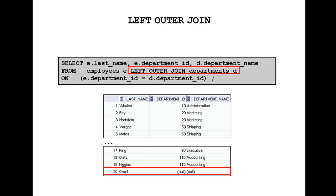The base example here is showing a left outer join. This query retrieves all rows in the employees table, which is the left table, even if there is no match in the departments table.